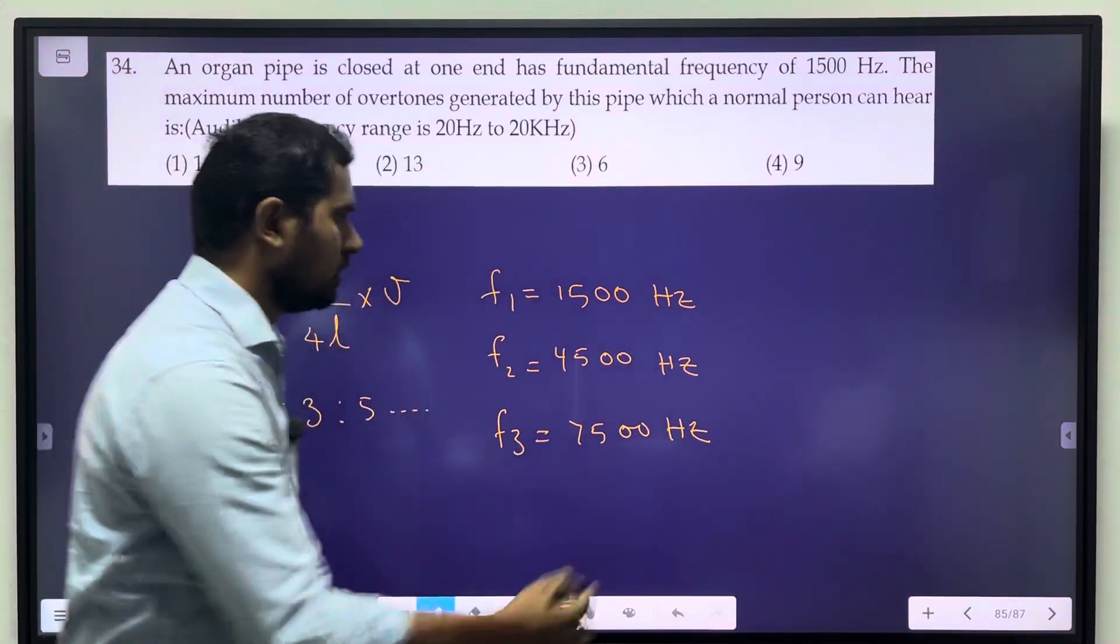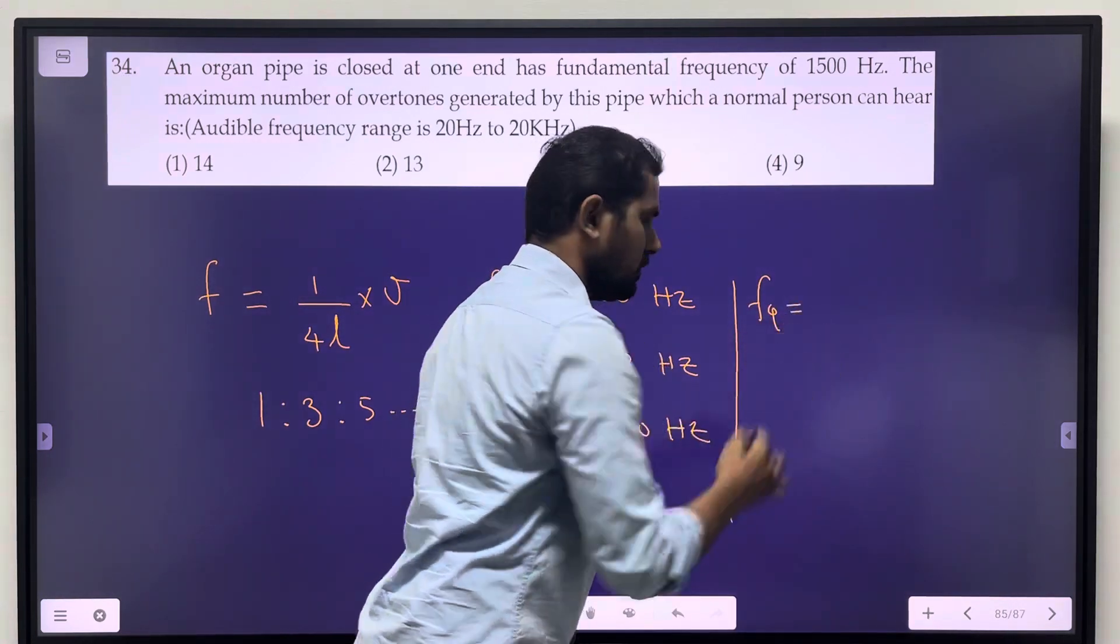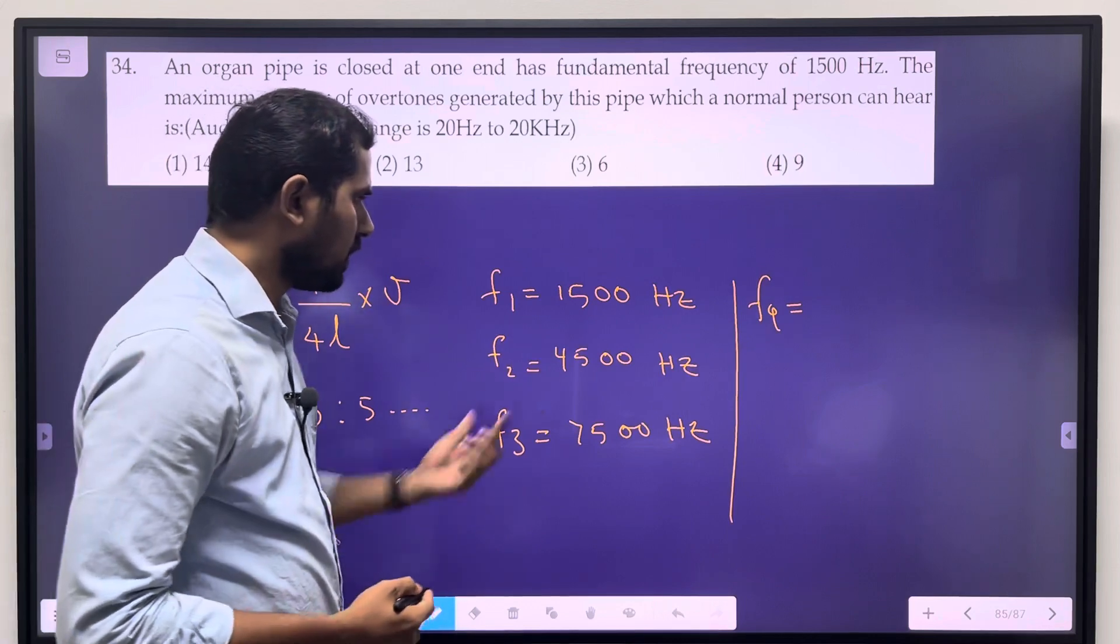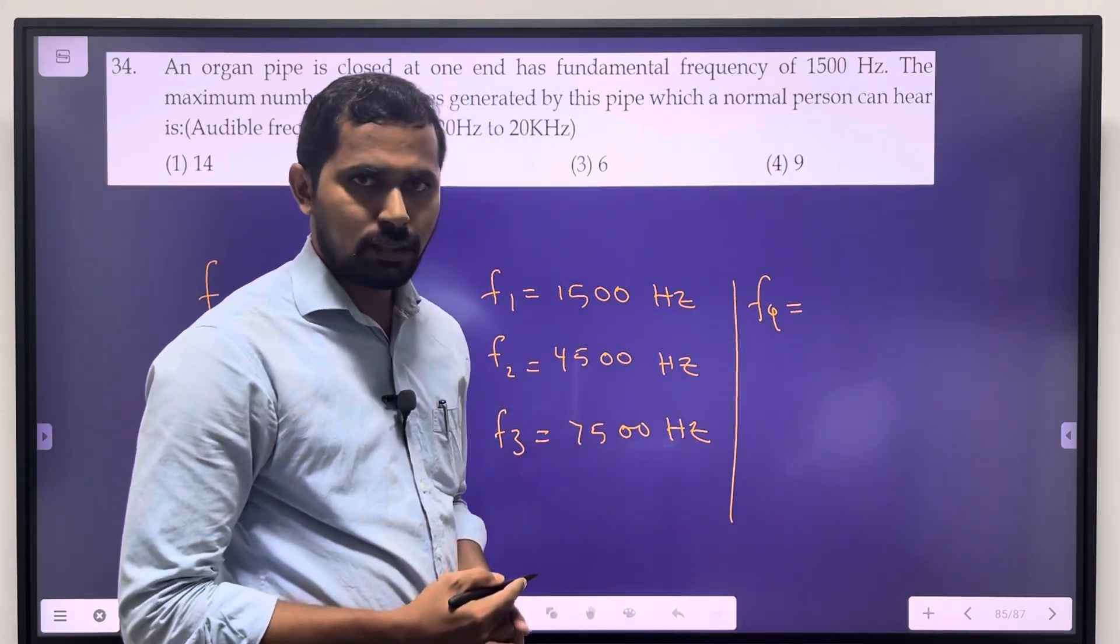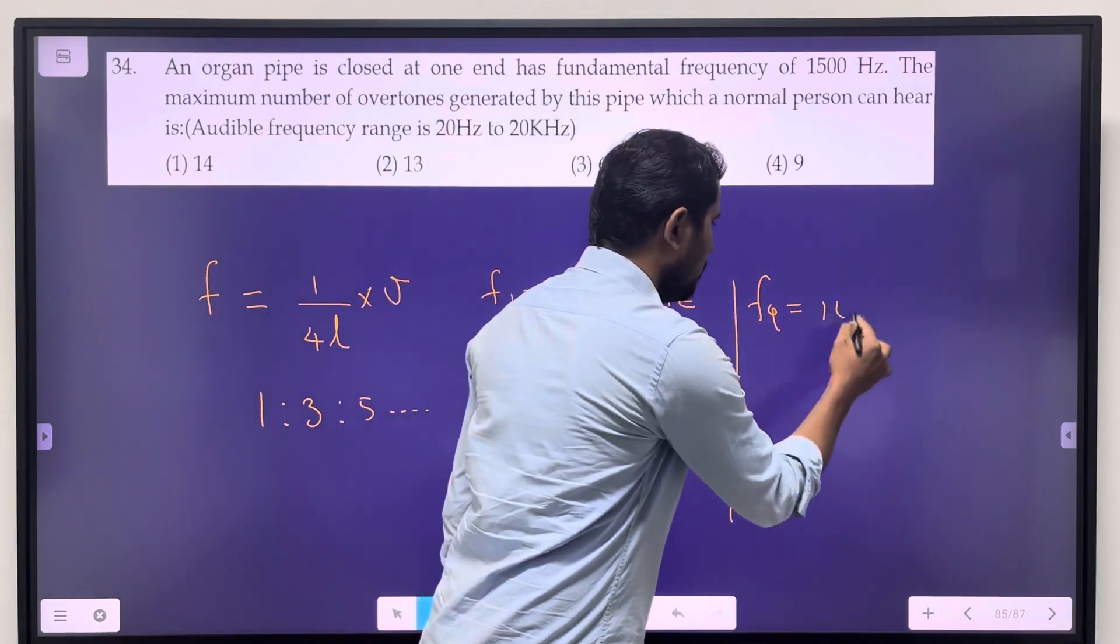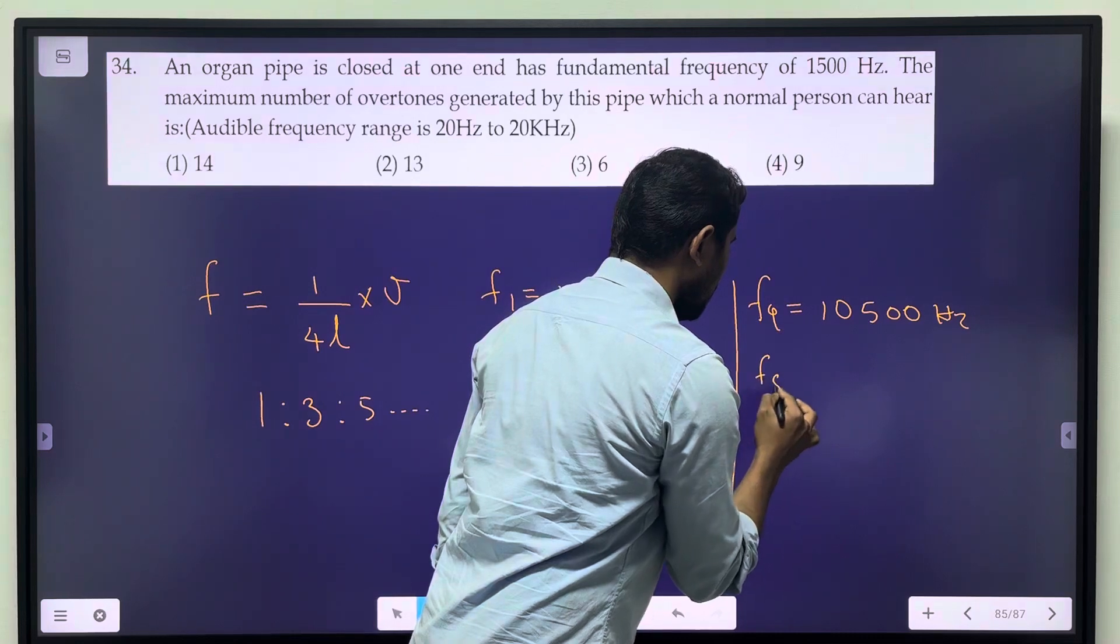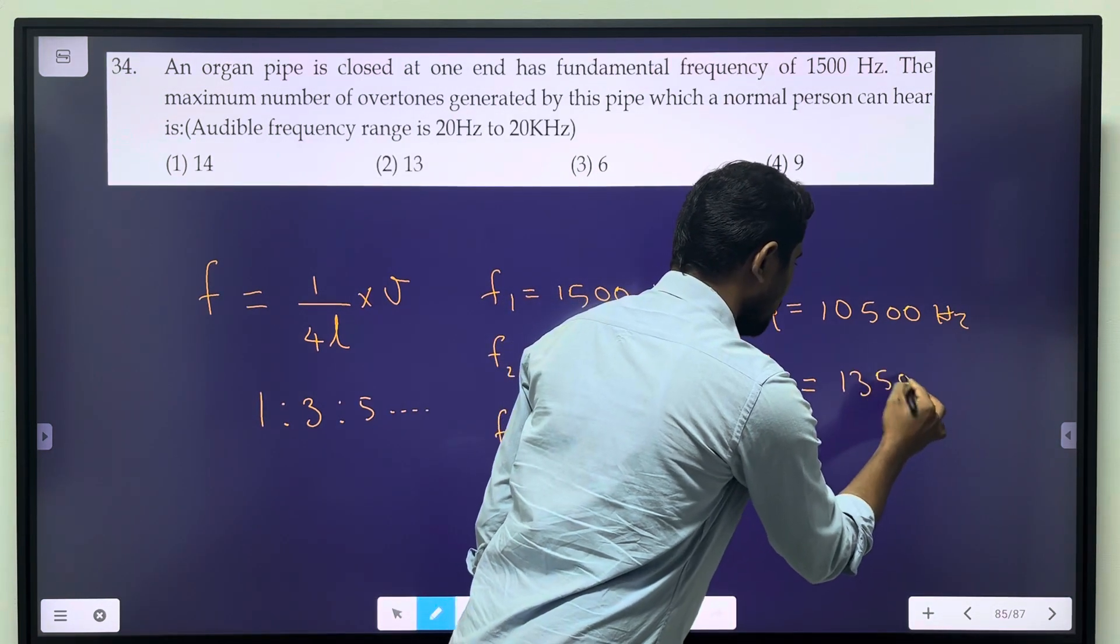f4 is equal to... 5th harmonic, 7th harmonic - 7500, 1500. f4 is equal to 1500.